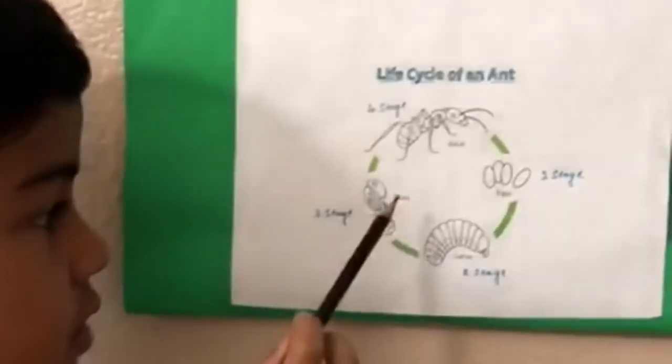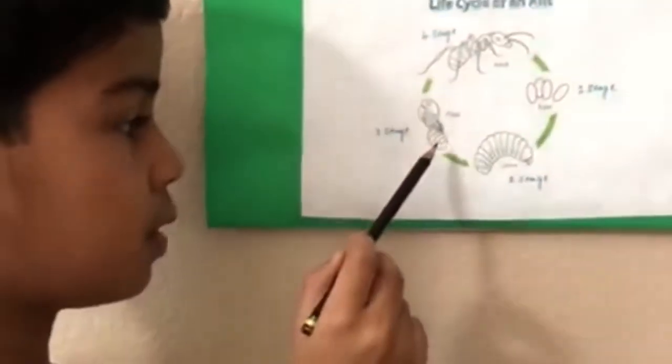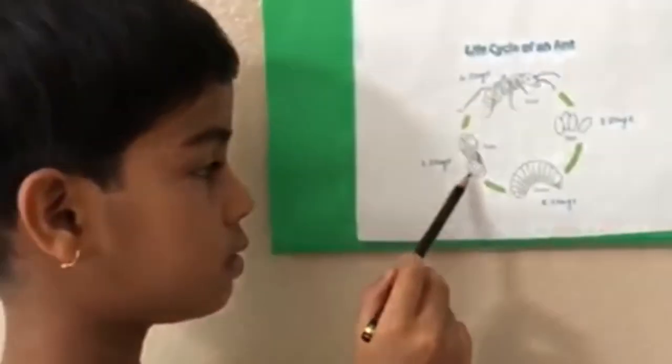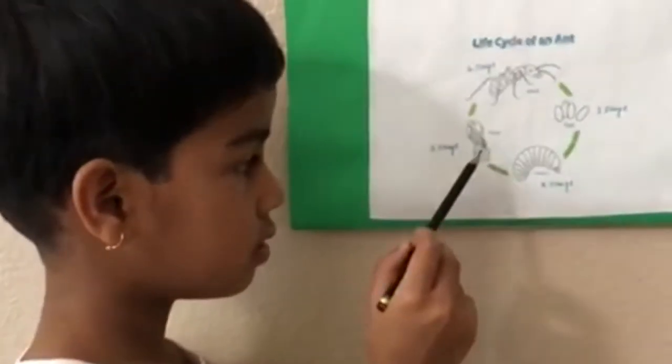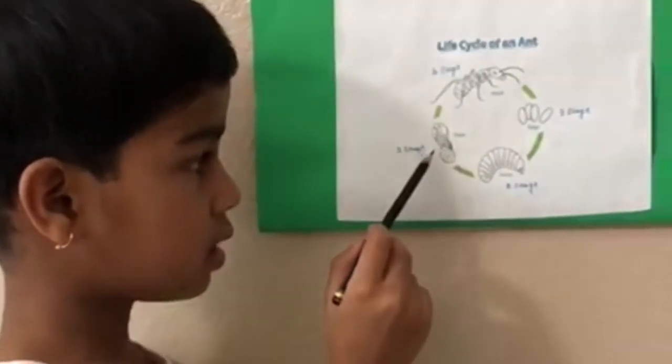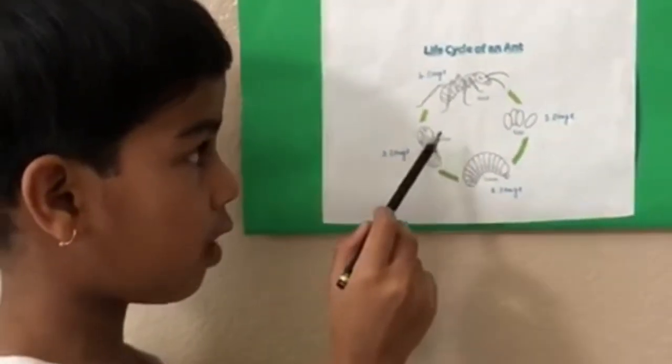Third stage is pupa. The pupa turns into its adult form.